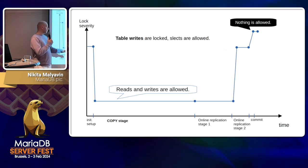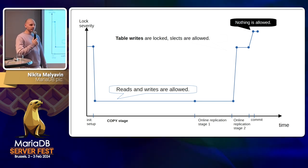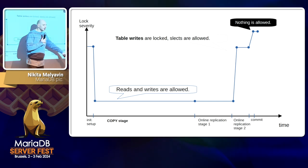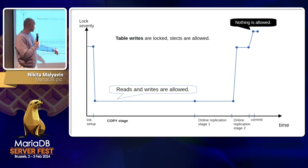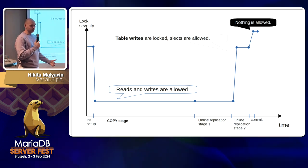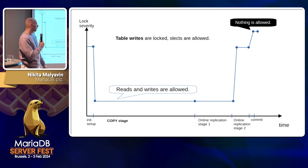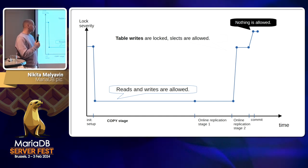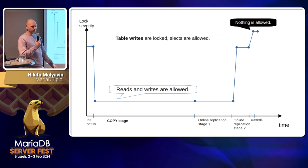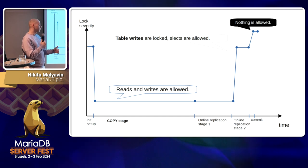For most of the time — the copy stage, most of the replication stage — you can run parallel DMLs. However, there is a small part at the end. We are replicating the data coming from the parallel DMLs, and then we just have to stop at some point. We have to raise the lock severity, where selects are still possible but no more writes, and apply the rest. It is expected to be a small step in terms of time — a few milliseconds. This commit step is also a few milliseconds, and this is expected to be a little bit more, but depends on the workload — it shouldn't be too much.